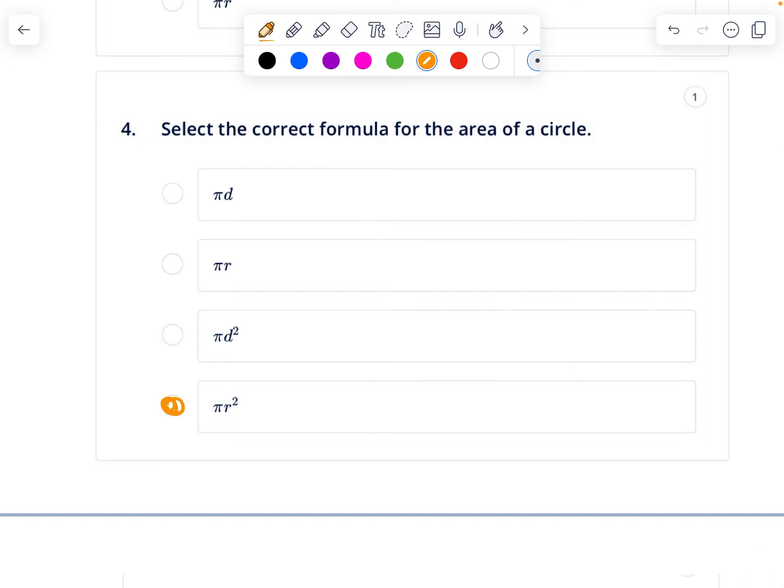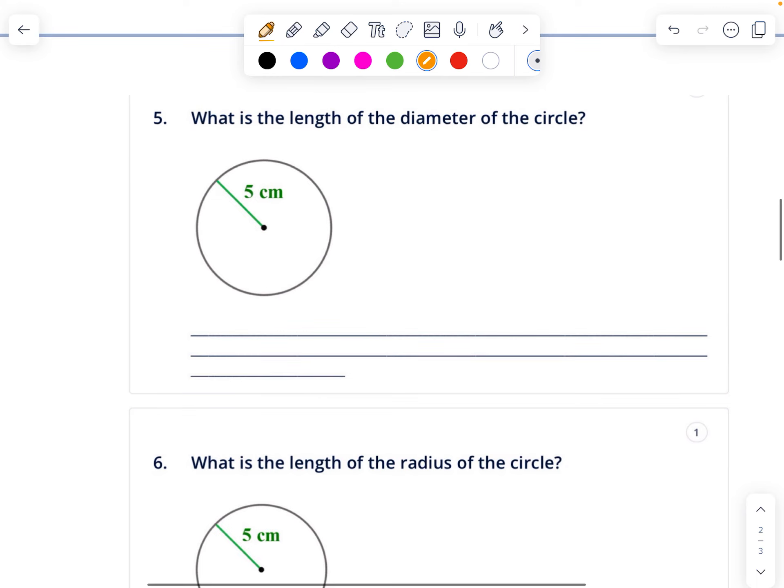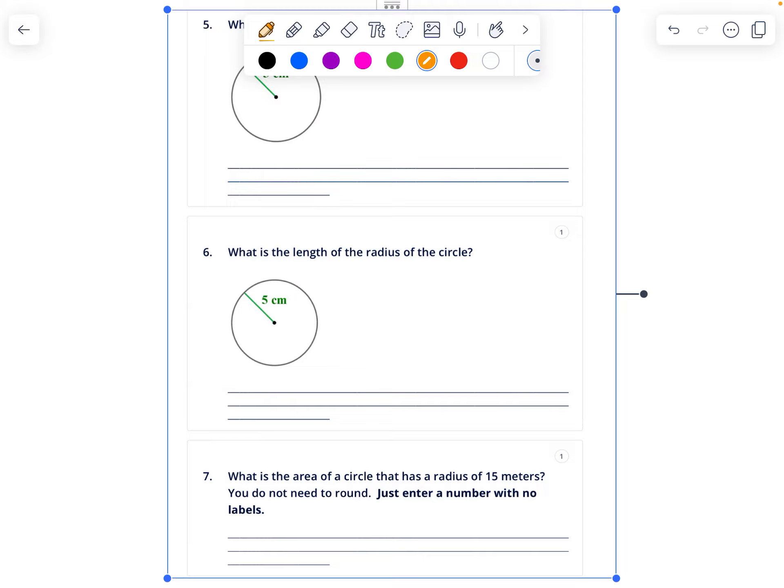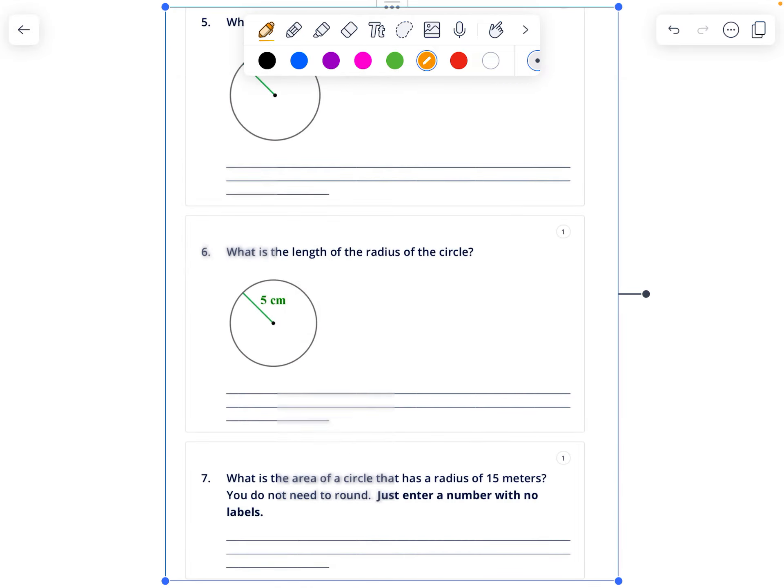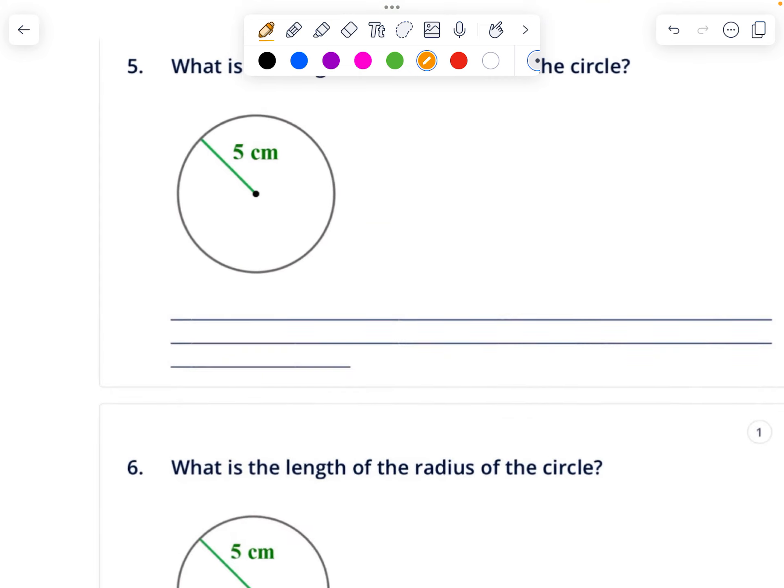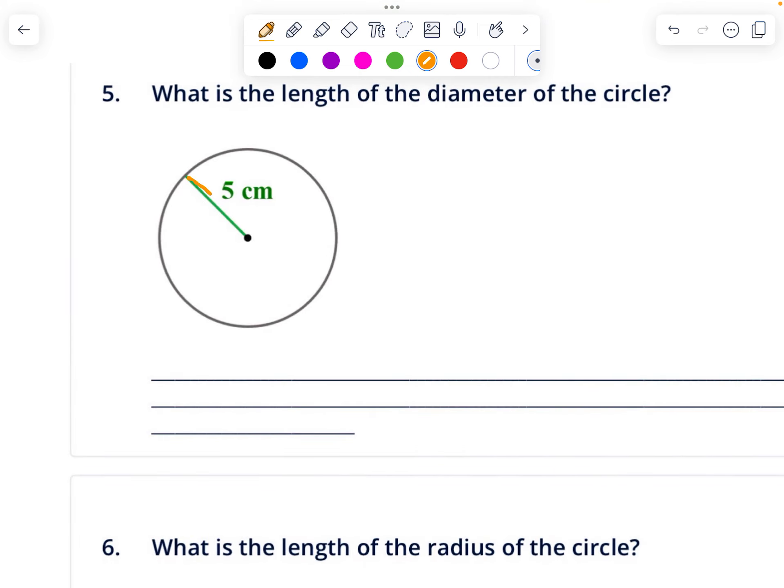The length of the diameter: diameter is all the way across and radius is halfway across. Since the circle in number five is showing halfway across, that's the radius. It's asking for the diameter, so there would be twice as much. All the way across would be 10, halfway across is 5. This one says what's the length of the radius, it's given to you here, it's just 5.